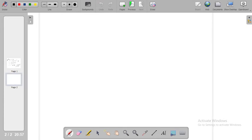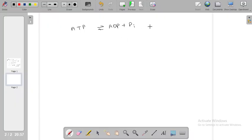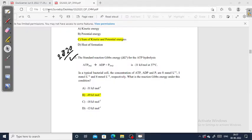The reaction is ATP to ADP plus Pi. The standard Gibbs energy here is ΔG° equals minus 31 kilojoule per mole.